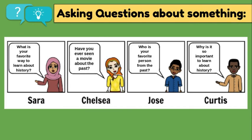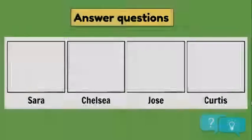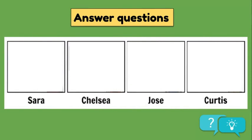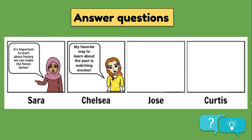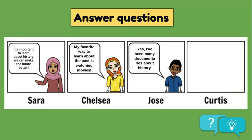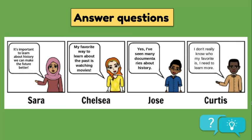These are all questions that can be asked during a discussion. Now these characters need to be able to answer questions and listen to what those questions were. Sarah answers Curtis's question: it's important to learn about history so we can make a better future. Chelsea says her favorite way to learn about the past is watching movies. Jose says yes, he's seen many documentaries about history. And Curtis answers the question that Jose asked: he doesn't really know who his favorite is — he needs to learn more.